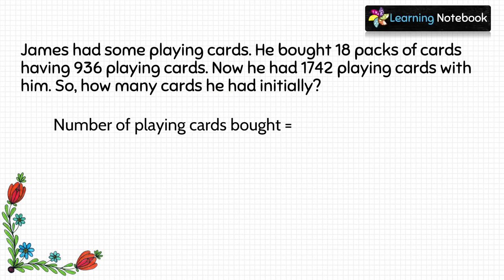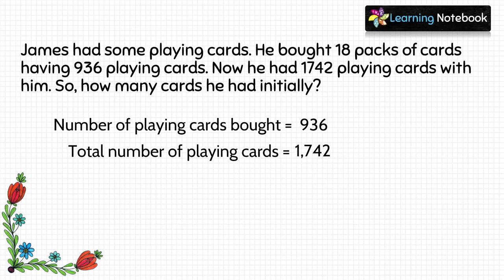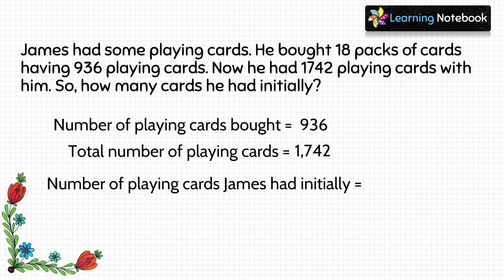Let's write the statements: number of playing cards bought by James = 936, total number of playing cards with him = 1742. To find the number of playing cards he had initially, we will subtract these two numbers.